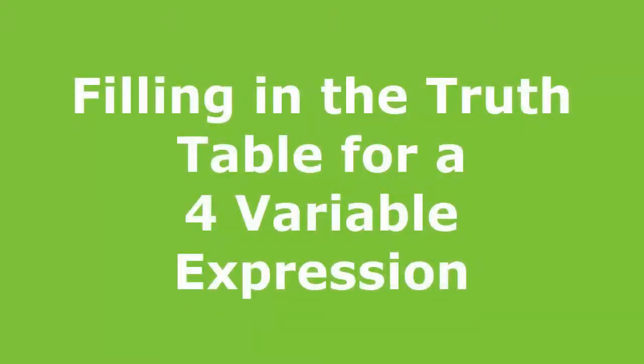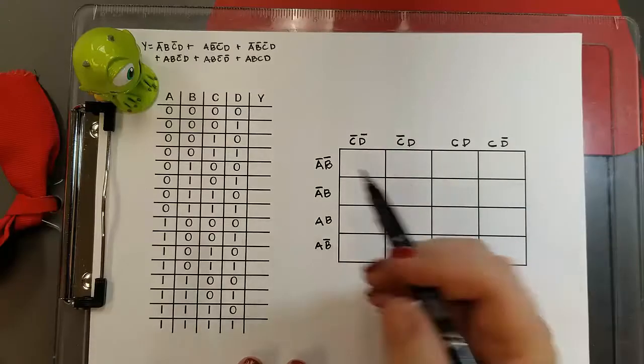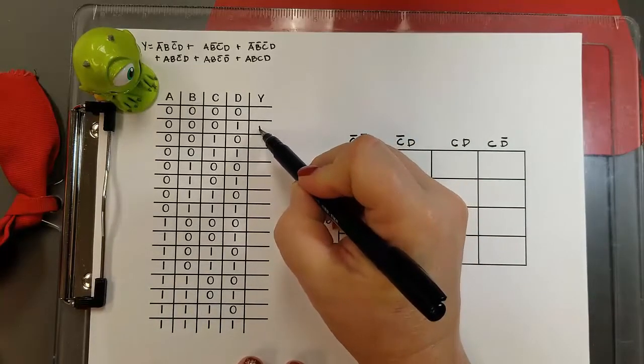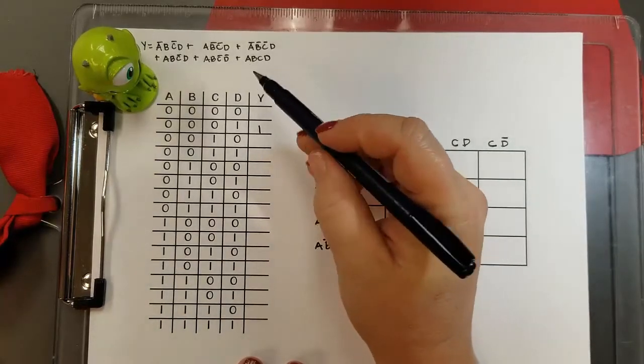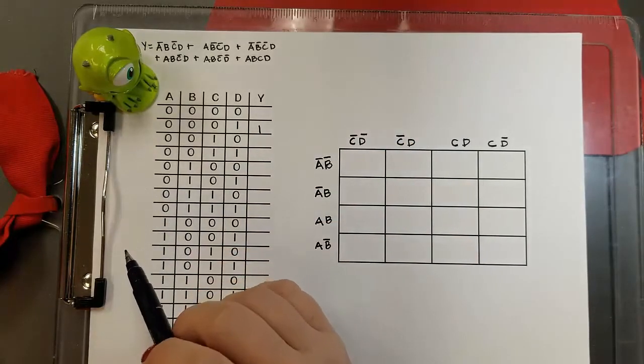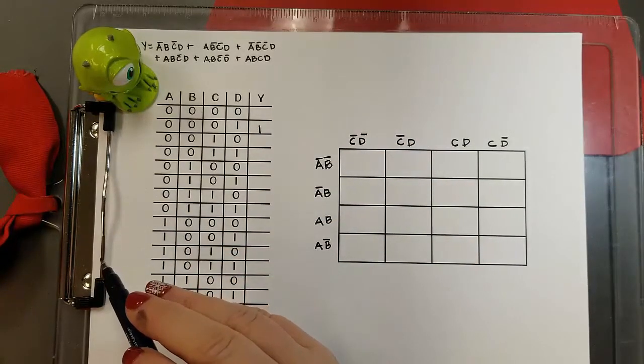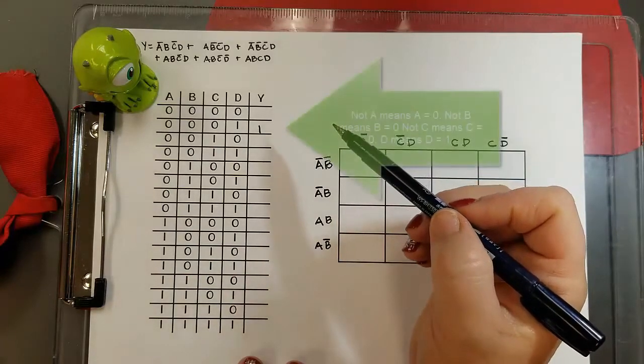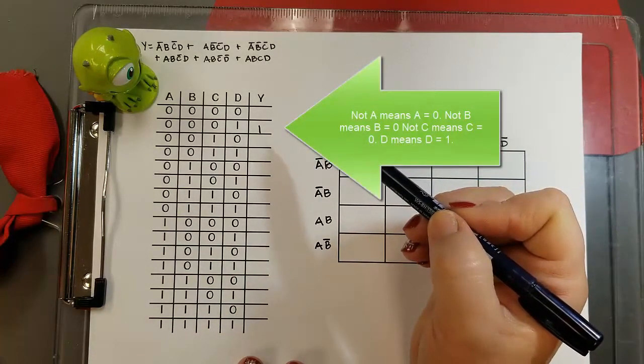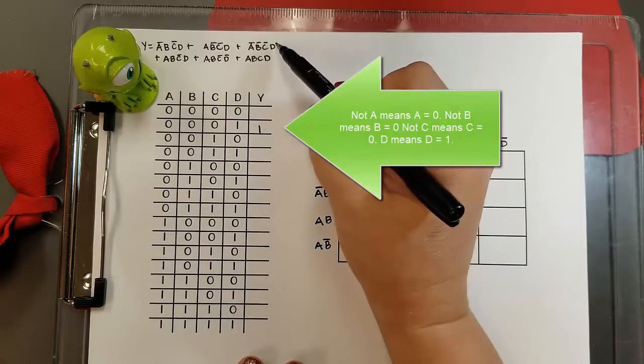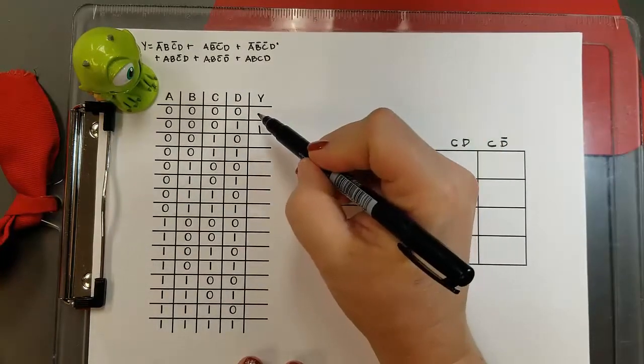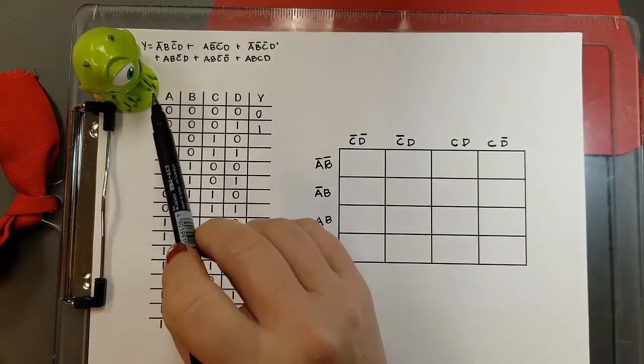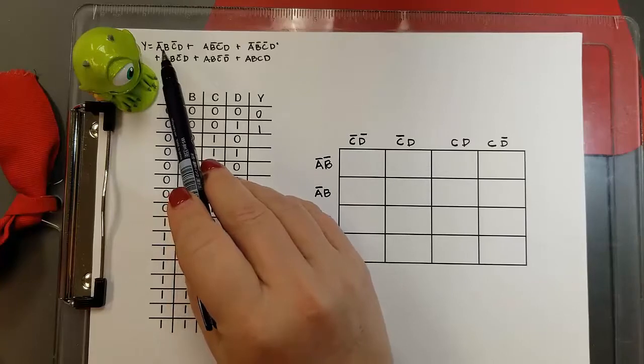Now let's look at how we fill in the truth table. For instance, the first term I marked is actually the third term in my expression there. It's not A not B not C D, because that's A equals zero, B equals zero, C equals zero, and D equals one. So I put a one for Y. Now I'm going to mark that off since I didn't do them in order, and now I'll put a zero for not A not B not C not D because we don't have that term.